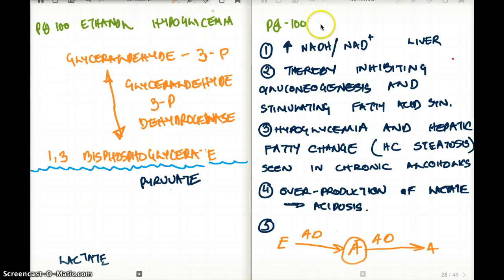Now in this particular step, this is very important. Glyceraldehyde to 1,3-bisphosphoglycerate, we are using NAD+ and making NADH. That's why most alcoholics have a lot of NADH production in their body. They have lots and lots of NADH.